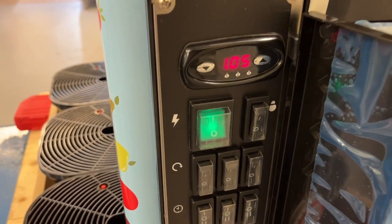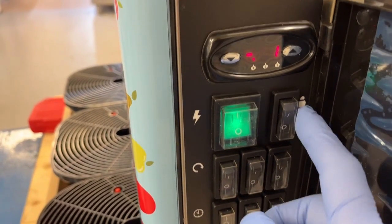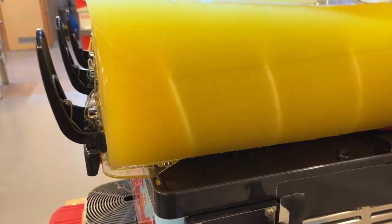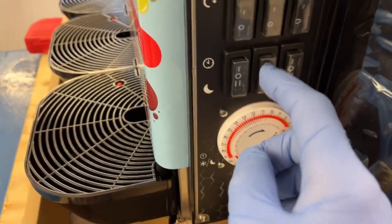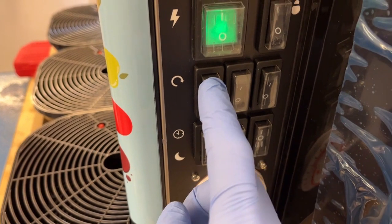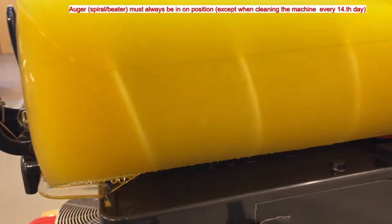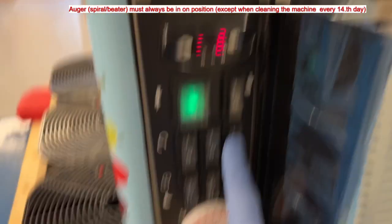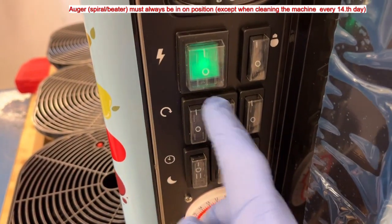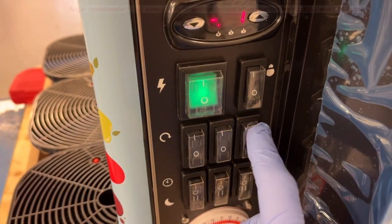That's the mode we want. So we start by putting the machine on, press the equipment, put on the lights, and now we put on the spirals. This one must always be on.